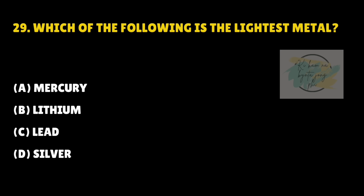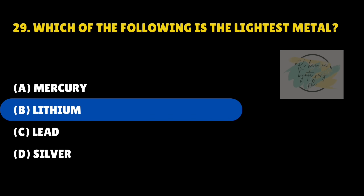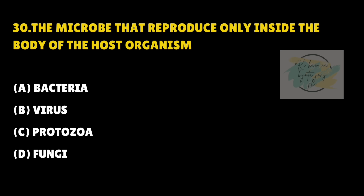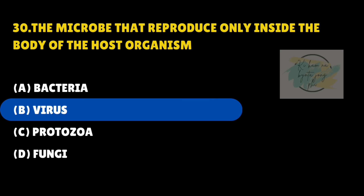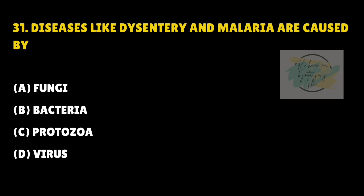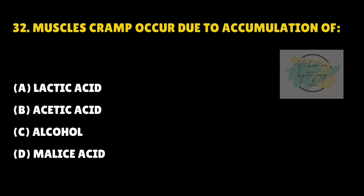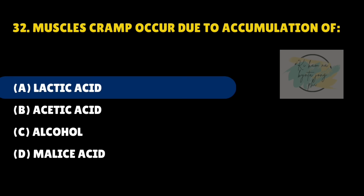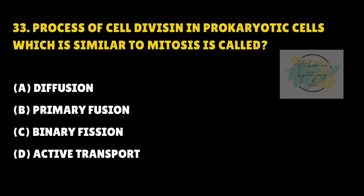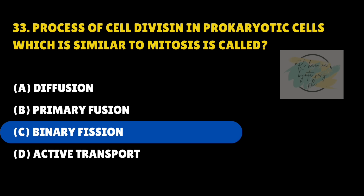Which of the following is the lightest metal? Answer is B — Lithium. The microbe that reproduces only inside the body of the host organism — answer is B — Virus. Diseases like dysentery and malaria are caused by — answer is C — Protozoa. Muscle cramps occur due to accumulation of — answer is A — Lactic acid. The process of cell division in prokaryotic cells similar to mitosis is called — answer is C — Binary fission.